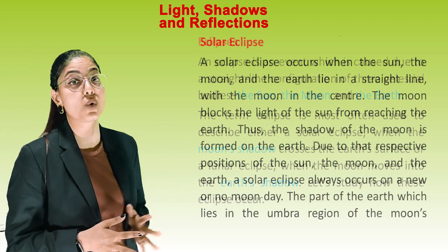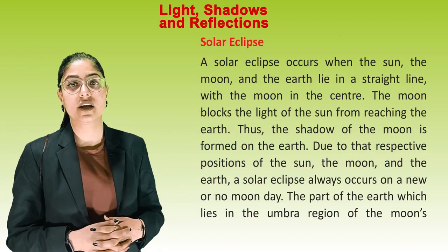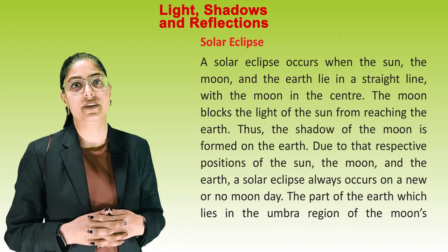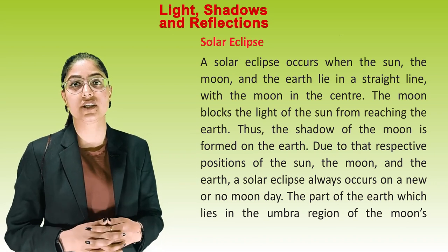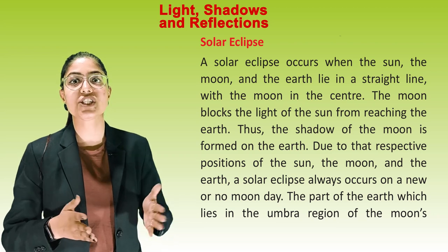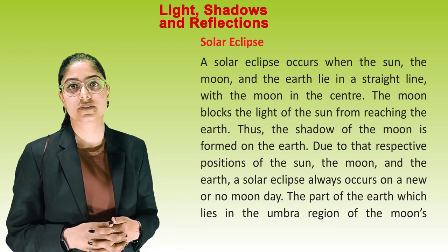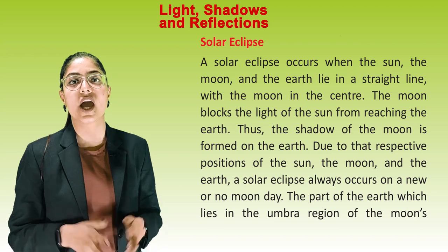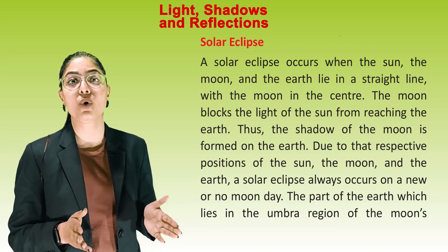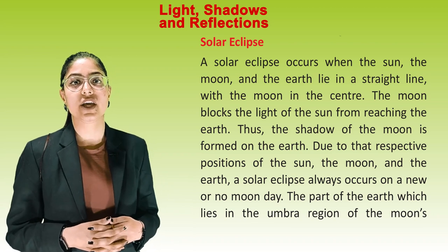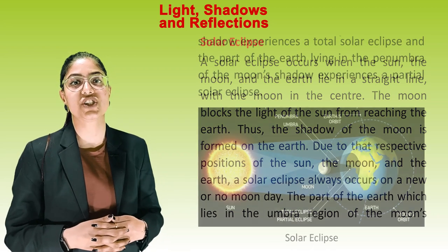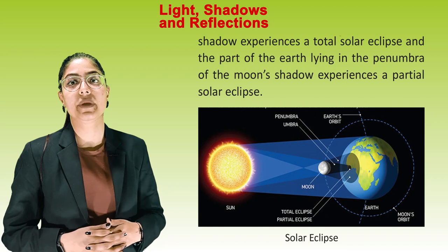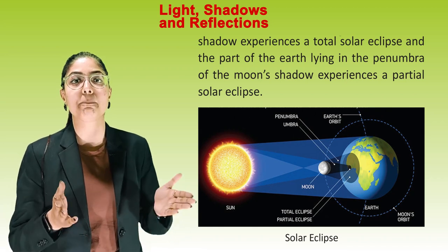Solar eclipse. A solar eclipse occurs when the sun, the moon, and the earth lie in a straight line with the moon in the centre. The moon blocks the light of the sun from reaching the earth, and thus the shadow of the moon is formed on the earth. A solar eclipse always occurs on a new moon or no-moon day. The part of the earth which lies in the umbra region of the moon's shadow experiences a total solar eclipse, and the part in the penumbra experiences a partial solar eclipse.